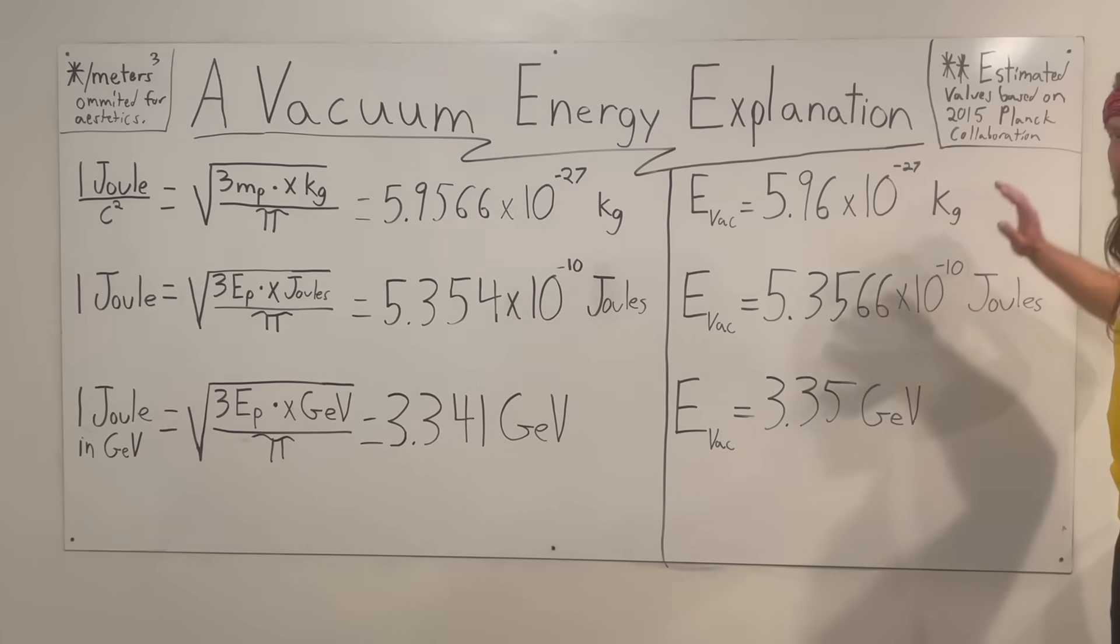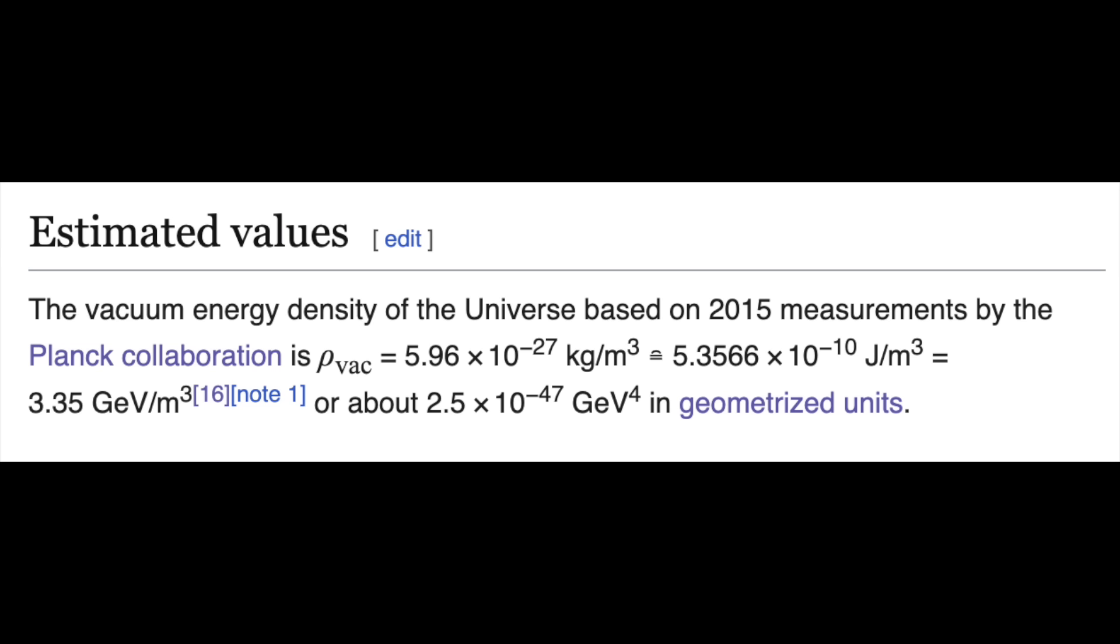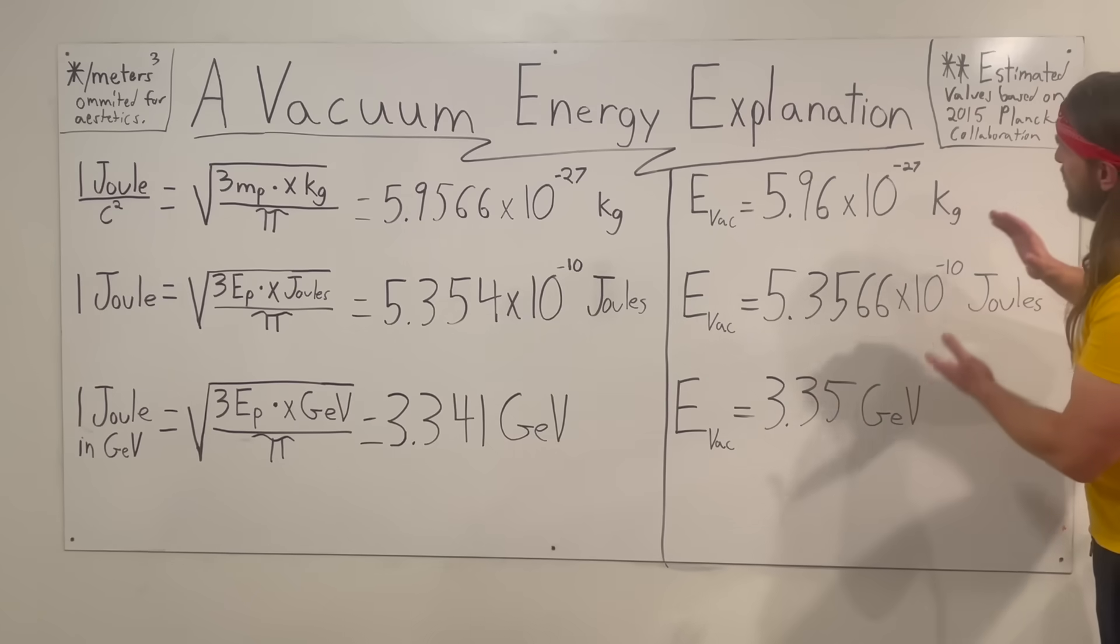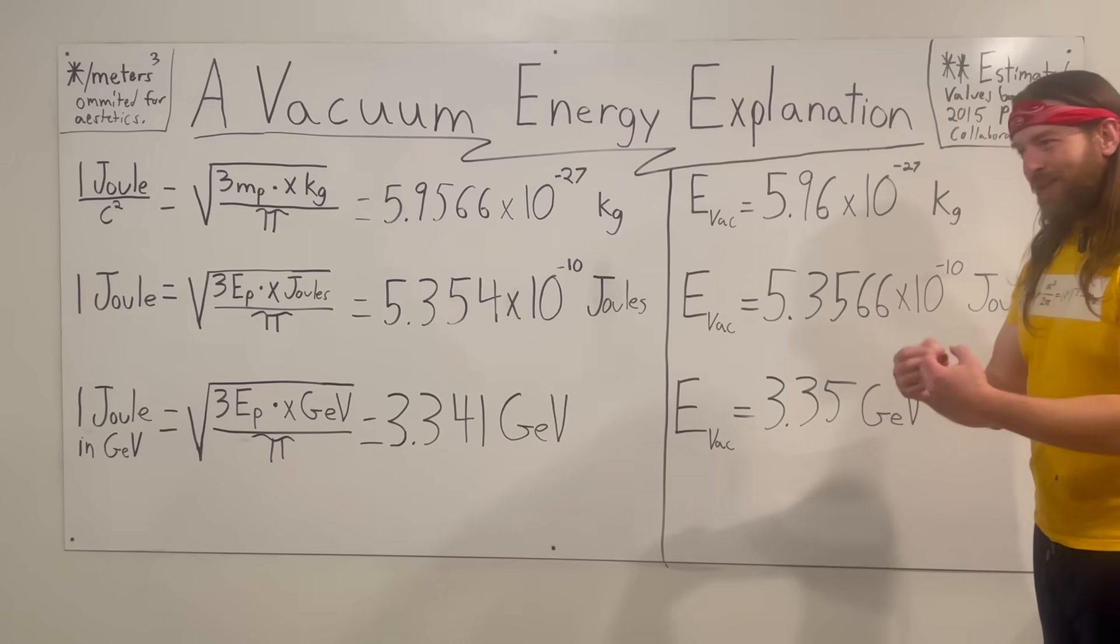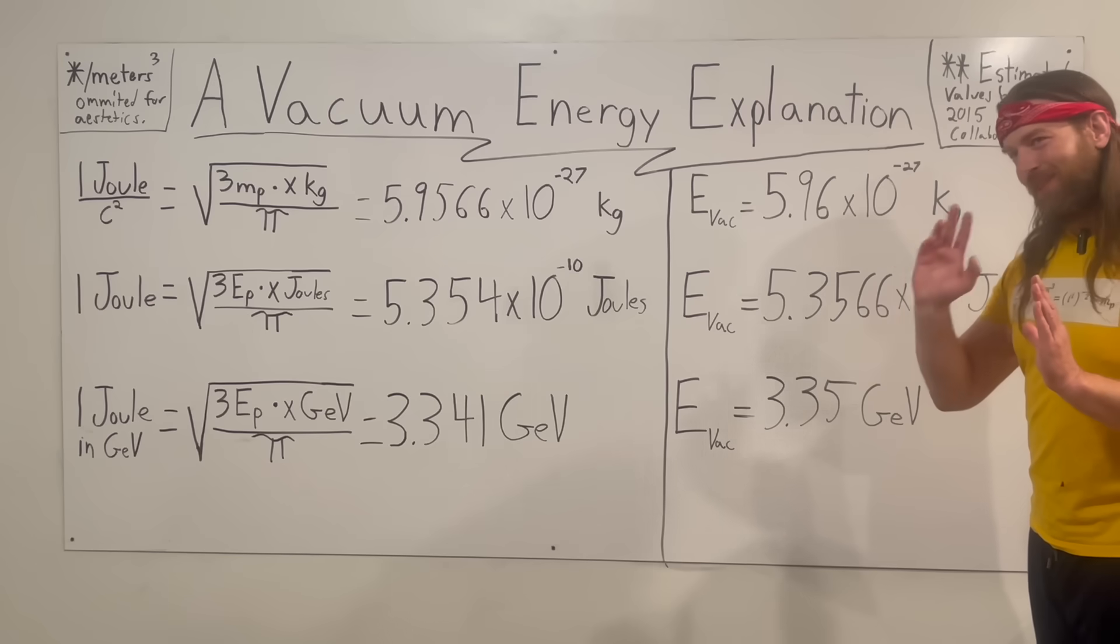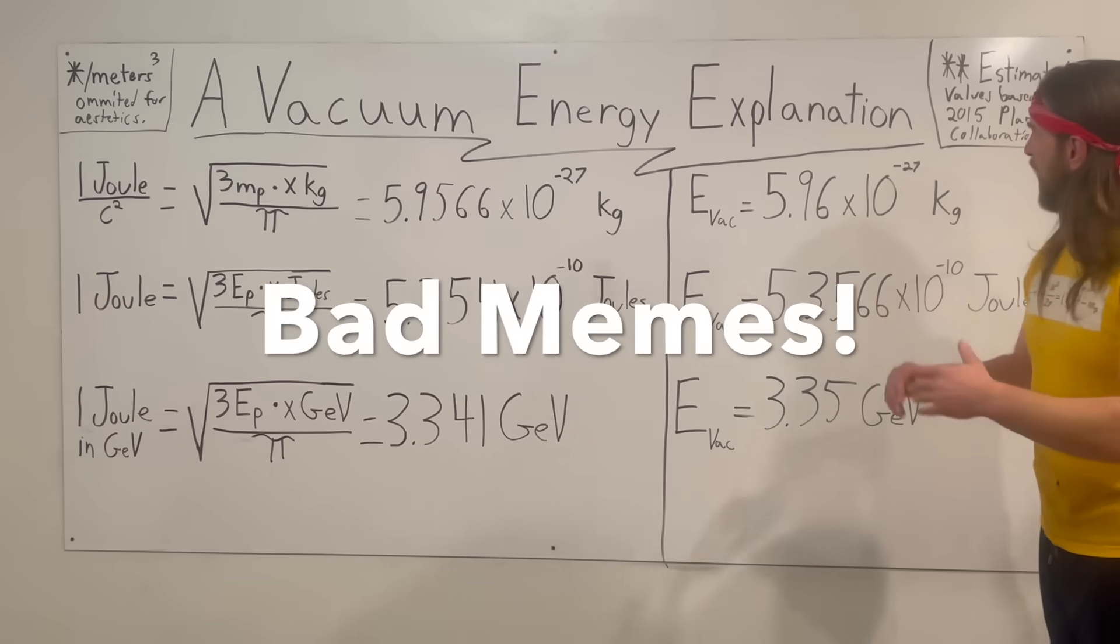Note these are the estimated values based on the 2015 Planck collaboration. These are the numbers you're going to find on Wikipedia, because they take the survey, input it into a calculation, and this is approximately what they get.